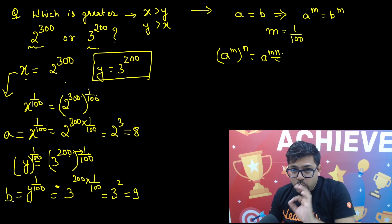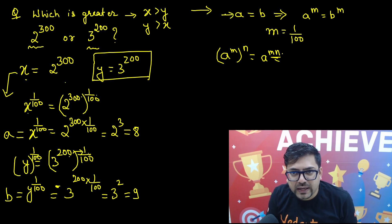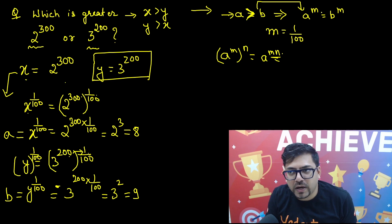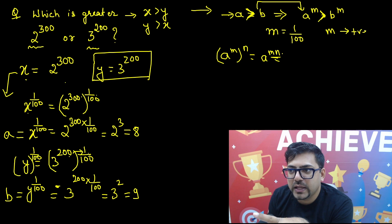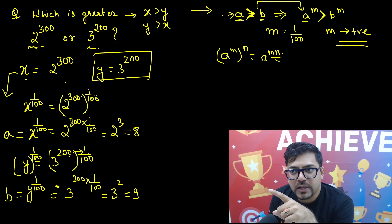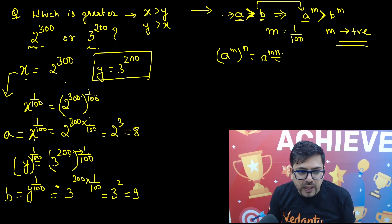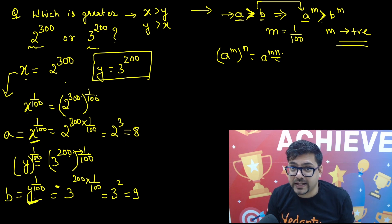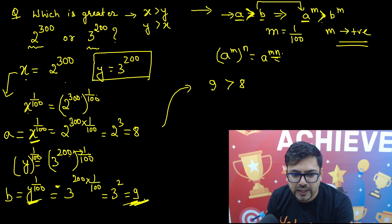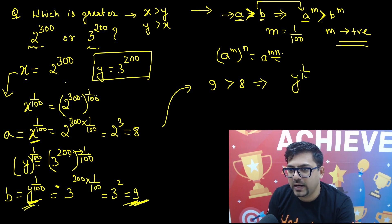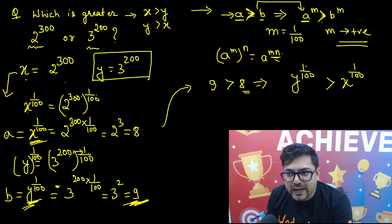If I call this number B, now this property must be followed: if A is greater than B, even after raising both to a positive power m, the inequality would not change. Since m is positive, the inequality is preserved. So comparing x raised to power 1 by 100 and y raised to power 1 by 100 — very easily I can see that 9 is greater than 8. So y raised to power 1 by 100 is greater than x raised to power 1 by 100. Since the power 1 by 100 is positive, this means y is greater than x.